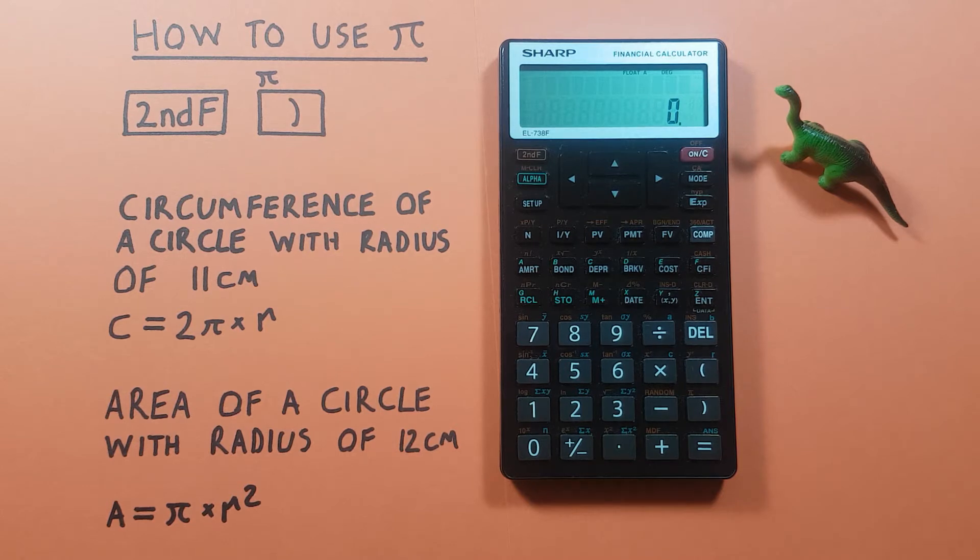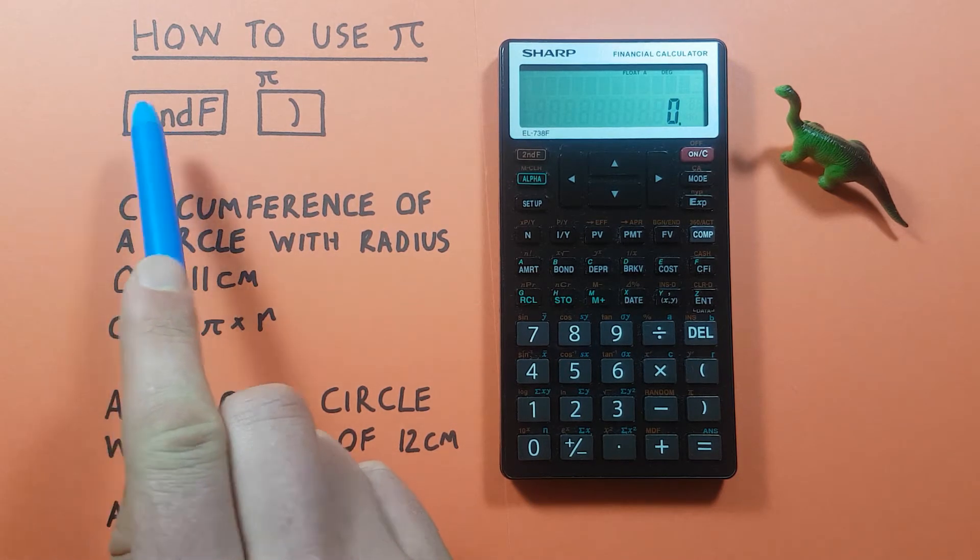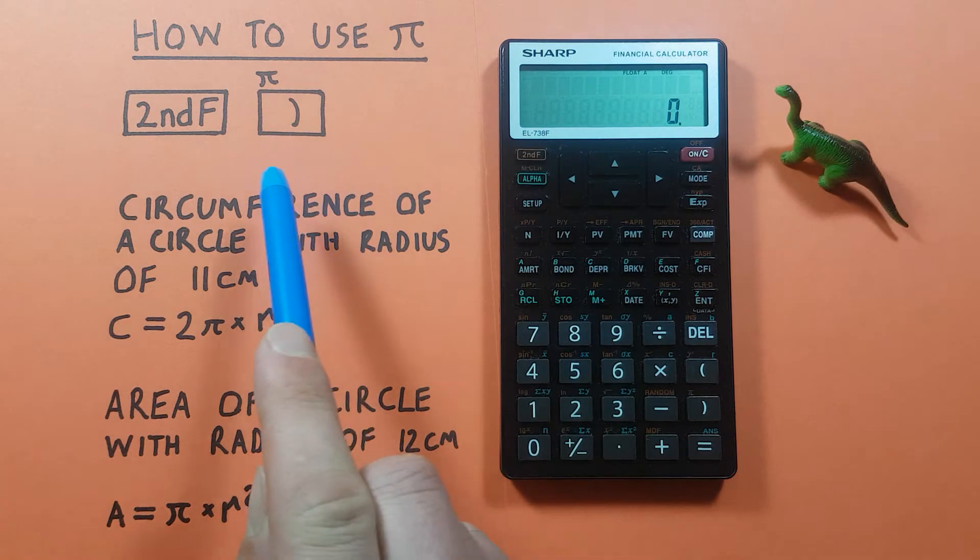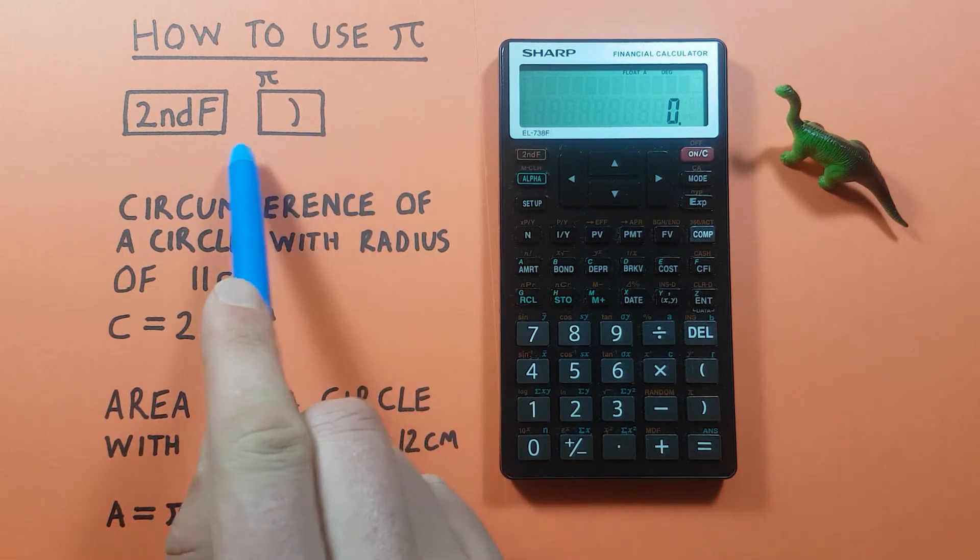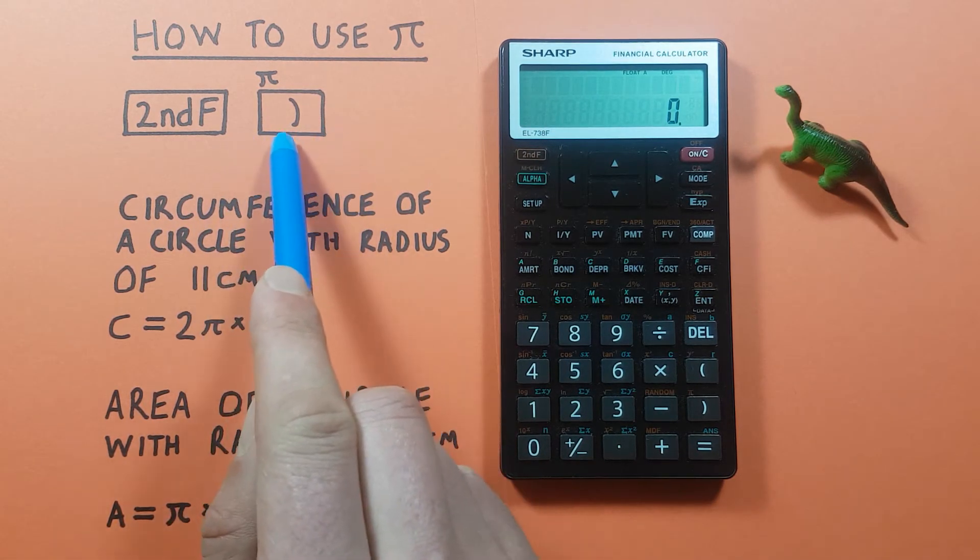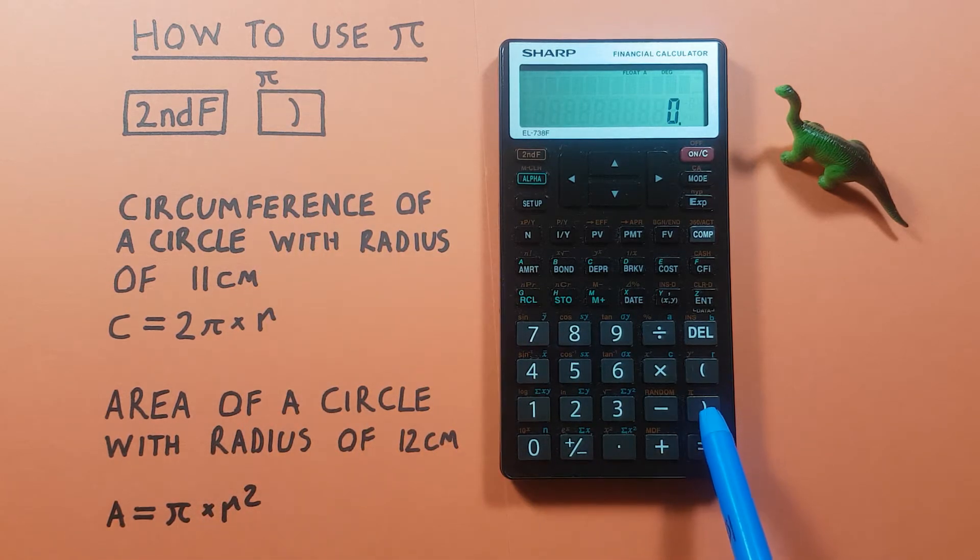To do this, we'll be using the second function key, which looks like this and is located here, and the PI key itself, which is the second function of the right bracket, located down here.